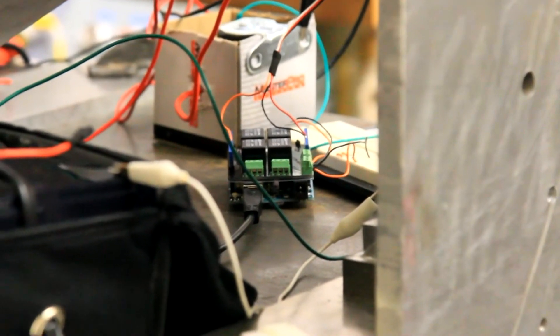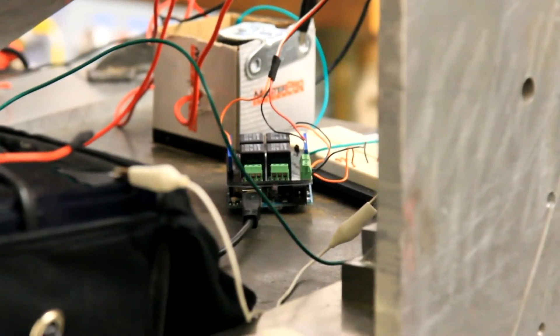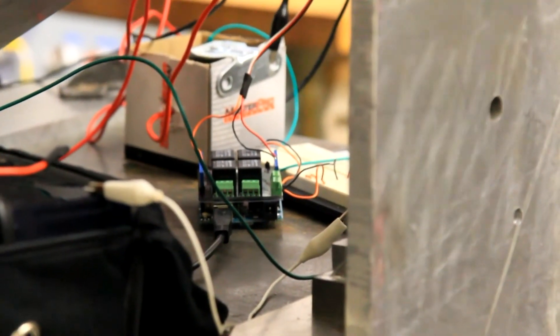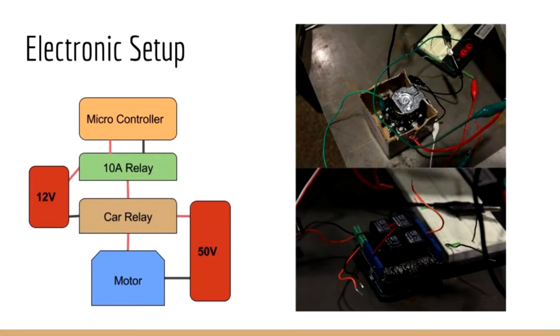To control our motor we used an Arduino microcontroller that turns on a relay, an electric switch that will allow power to flow. Unfortunately the Arduino can't handle the current or voltage we are sending to our motor, so we actually used the Arduino's relays to engage an additional set of relays allowing our full 50 volts to power the swing.